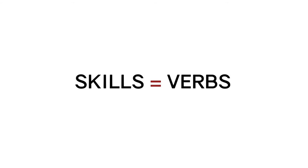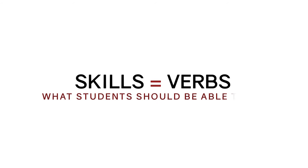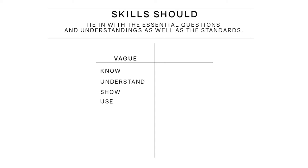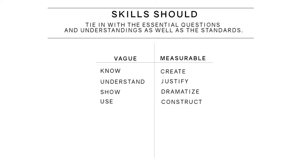If content represents the noun of what we teach, then we could say skills are the verbs. Skills are what students should be able to do. Like the content we teach, skills should tie in with the essential questions and understandings as well as the standards. They should also be measurable. Words like 'know,' 'understand,' 'shown,' and 'use' are vague. We should use active verbs like 'create' instead of 'know,' or 'justify' instead of 'understand.'